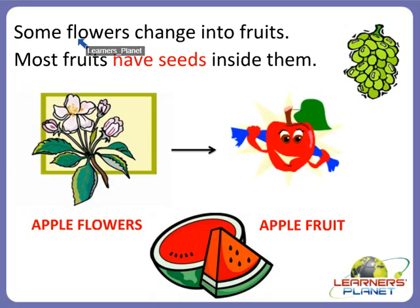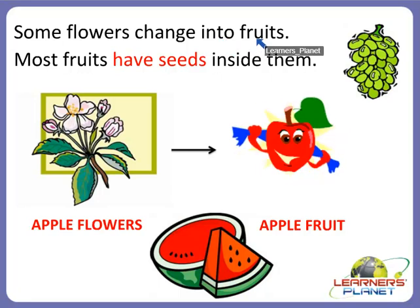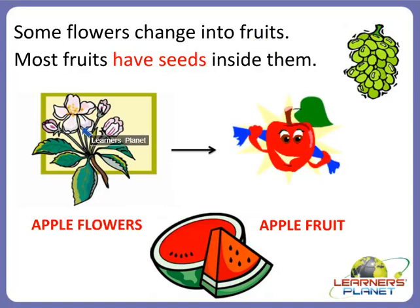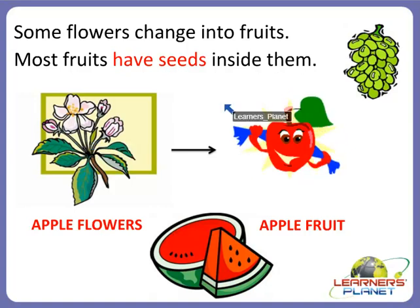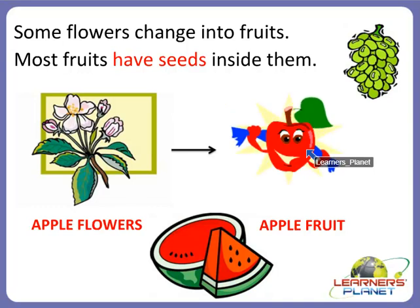There are some flowers that change into fruits. For example, these are apple flowers, and after some time when they grow, these apple flowers change into apple fruits. That is why we get many apples from the apple tree.